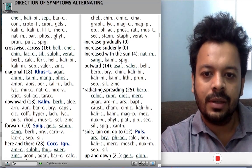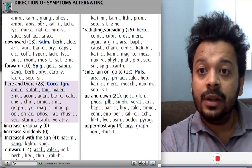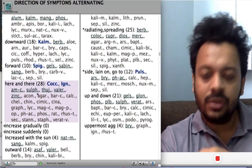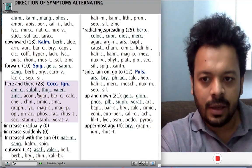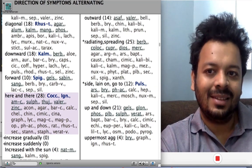For example, you can see a very interesting set of rubrics - direction of symptoms here and there. Sometimes a patient will get pain here, then there, then here, then there, and you will find remedies like Cocculus, Ignatia, things like that.